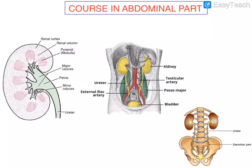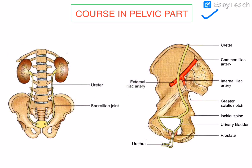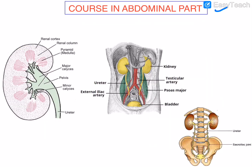For better understanding, the course of the ureter will be discussed in two parts: the course in the abdominal part and the course in the pelvic part. The abdominal part occurs in two stages: from the renal pelvis up to the ureter proper, and from the ureter proper up to the entry of the ureter into the pelvis.